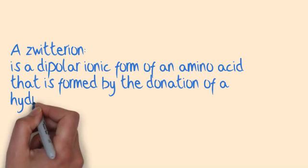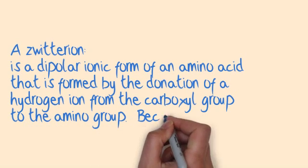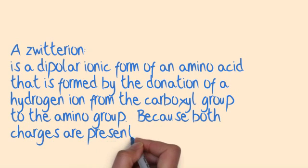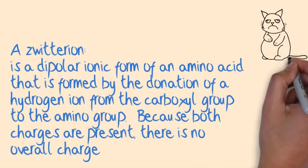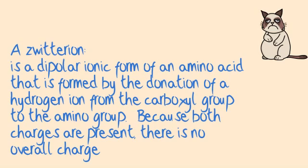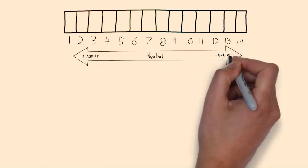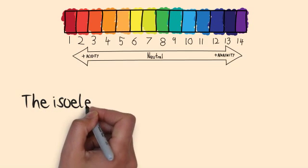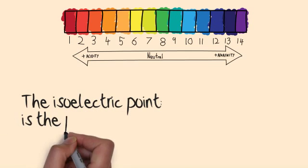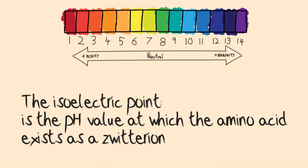A zwitterion is a dipolar ionic form of an amino acid that is formed by the donation of a hydrogen ion from the carboxyl group to the amino group. Because both charges are present, there is no overall charge. The isoelectric point is the pH value at which the amino acid exists as a zwitterion.